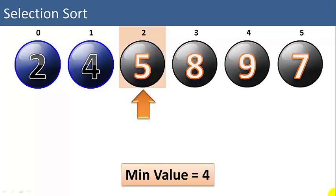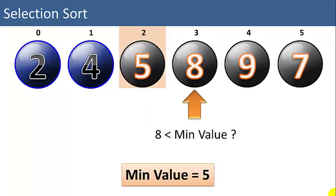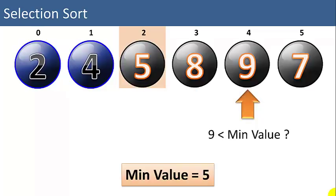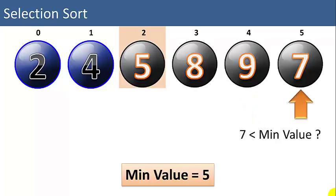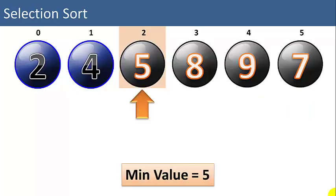Our third iteration will start with the 5. We set min value equal to 5. We compare 8 to 5 — is 8 less than 5? No. Is 9 less than 5? No. Is 7 less than 5? No. So 5 is already in the correct position. We didn't know that until we iterated through the list to compare to each item. Now we know the 5 is in the correct position and we don't have to do any swapping. So I'll mark 5 as sorted.